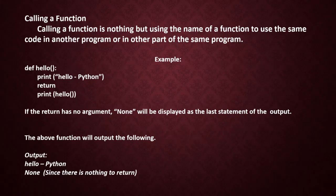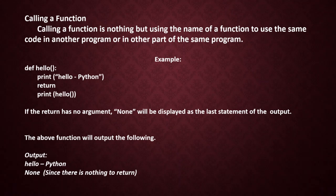Next, we are going to see calling a function. What do we mean by calling a function? Calling a function is nothing but using the name of a function to use the code in another program or in another part of the same program. Since we want to reuse the code, we call a function using its name — which may be in another program or in some other part of the same program.